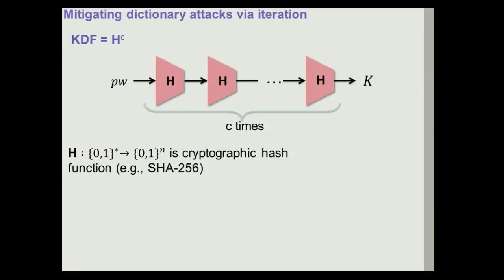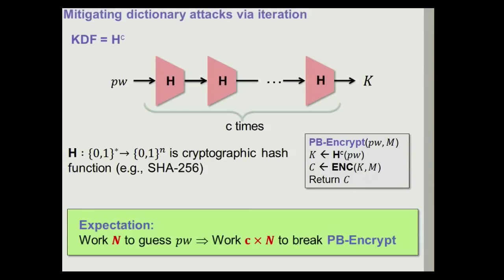One technique used by system designers to mitigate such dictionary attacks is to make KDF computations sufficiently expensive so that such a dictionary attack is going to be slowed down. For example, one common technique to derive a key derivation function is to just iterate a cryptographic hash function, such as a function from the SHA family, a certain number of times, c times. If we use this within a password-based encryption system to derive our key, then the expectation is that if we need to apply a certain amount of work, say N, to retrieve a password through a dictionary attack, then we will expect that because of the complexity of computing the KDF, it will take work equal to c times N to break the password-based encryption scheme using this KDF.